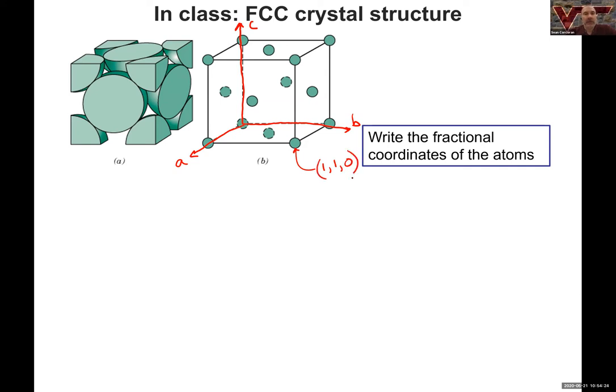And now for this face-centered cubic structure, we've got atoms sitting in the centers of faces. So this face atom here then, for example, would be just one-half of the way out in the A direction, one-half over in the B. And we're in the AB plane, so zero in the C.